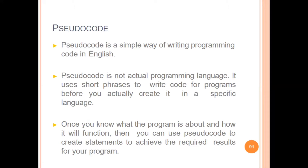Pseudocode is a simple way of writing programming code in English. We can use a little bit of algorithm and a little bit of code. Pseudocode is not tied to any particular programming language — it helps to design the corresponding programming language. Pseudocode uses short phrases, as you can see in the code.